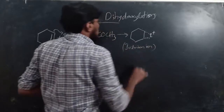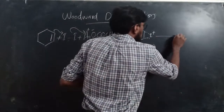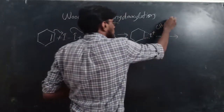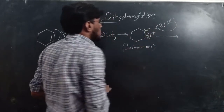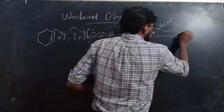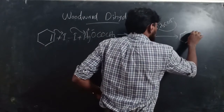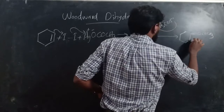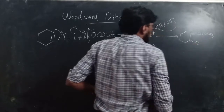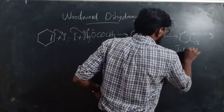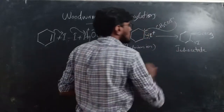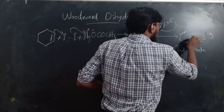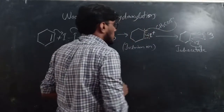In the next step, the acetate ion (CH3COO⁻) attacks through the backside of the iodonium ion, forming an iodoacetate (with OCOCH3 and I groups). Through neighboring group participation, the oxygen's lone pair attacks the adjacent carbon through the backside, the iodine leaves, and an oxonium ion is formed — just as in the Prevost mechanism.